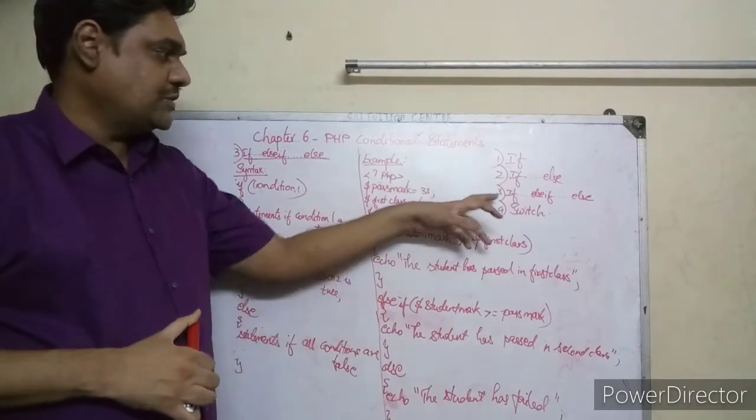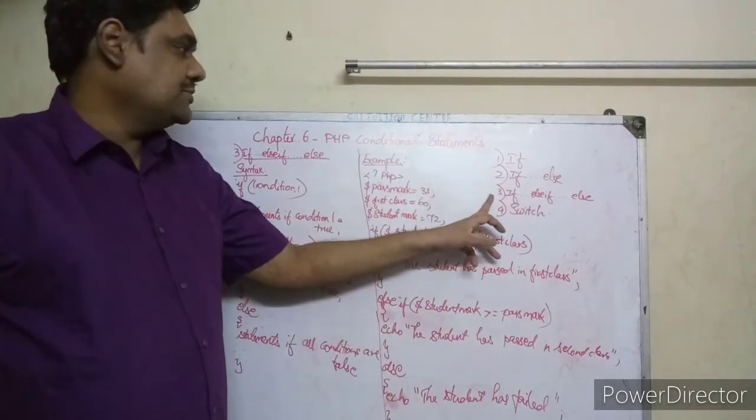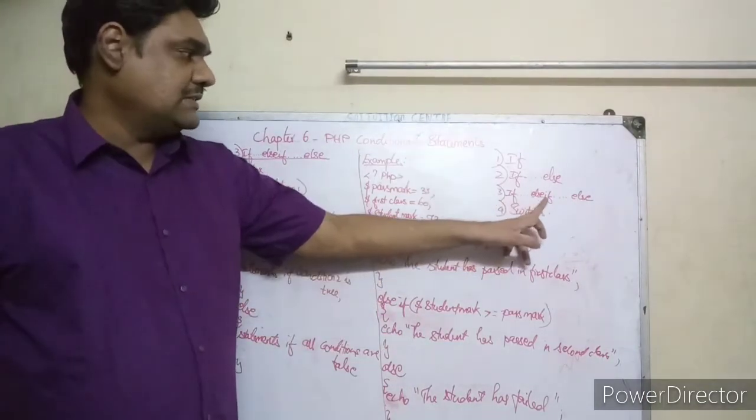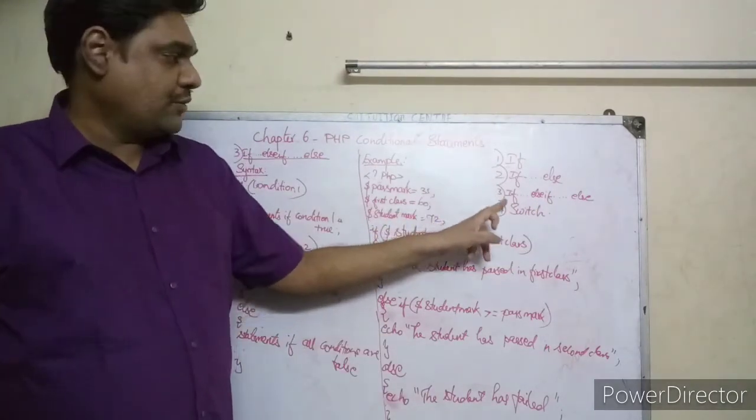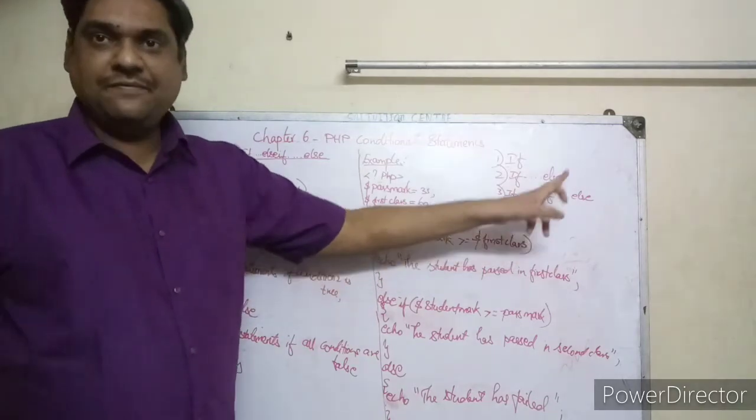Hello children, today we are going to see about the third conditional structure, that is if-else-if-else. Last class we have seen about if and if-else, now we are going to see about if-else-if-else.